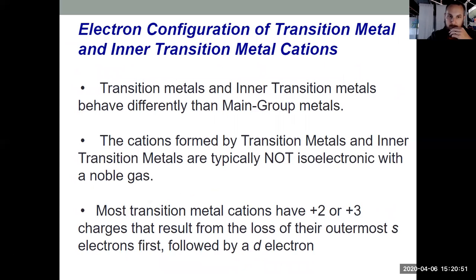How about transition metals and inter-transition metals? Looking at our D block and our F block. We saw in Chapter 6 when those form cations, they're different. We're still losing valence electrons, but the electrons that are lost first are the S electrons, followed by the D electrons. So those things tend not to be isoelectronic with a noble gas when we have transition metal or inter-transition metal cations.